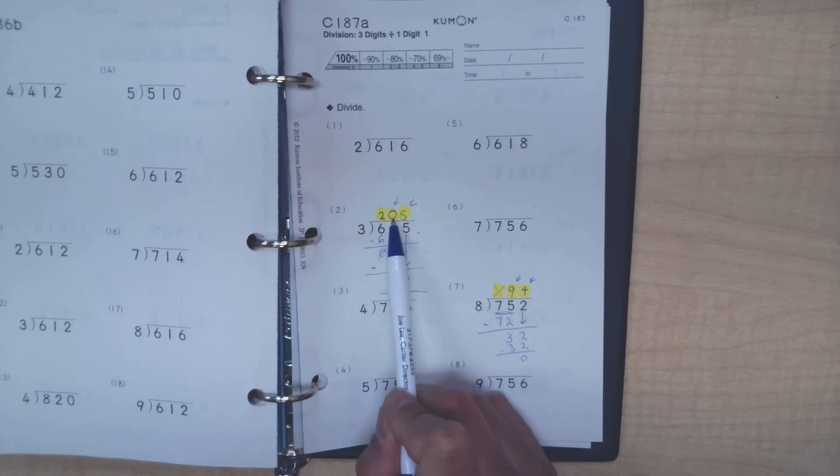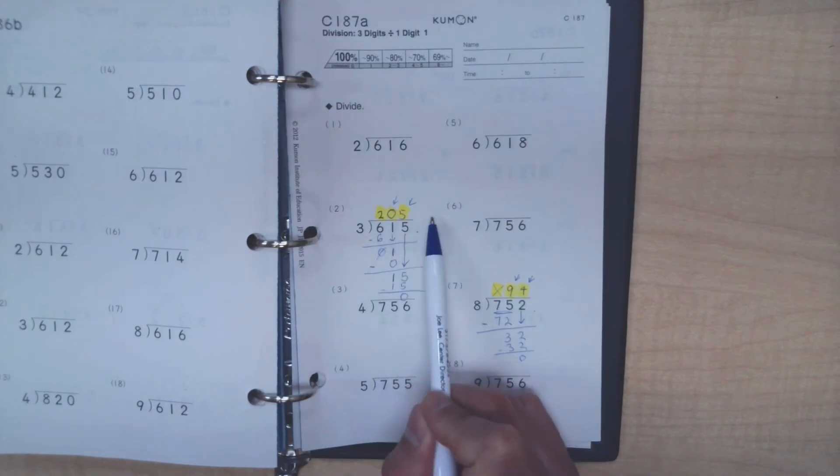You can skip the first one if the division is impossible between these two numbers, but you can never skip the middle, any middle numbers, or the last numbers. If the division cannot be done, then you will put a 0 instead, and you cannot skip it.